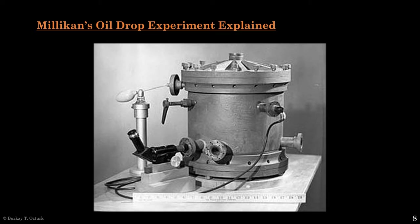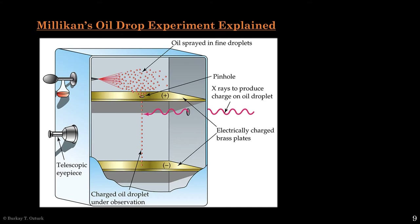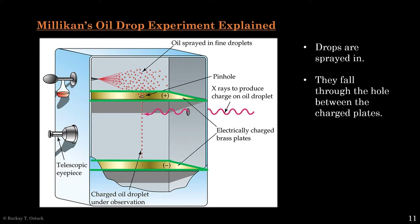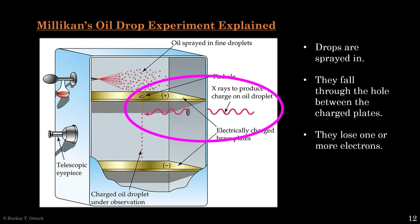In his famous oil drop experiment, Millikan used what looks like a weird pressure cooker. This is how the inside looked. First, fine oil is sprayed in the perfume atomizer, which produces a fine mist of oil drops. Some of these drops fall through a hole in a compartment between two electrically charged plates. In that compartment, the drops are hit with high energy radiation, which induces a positive electrical charge in the drops.